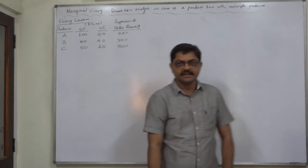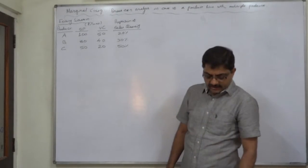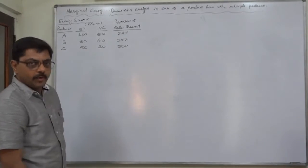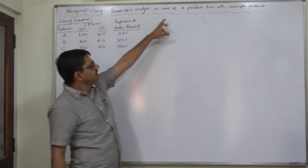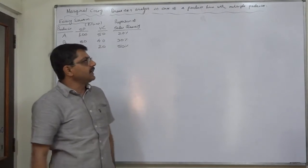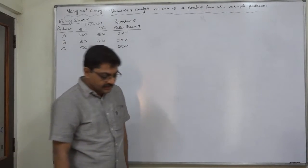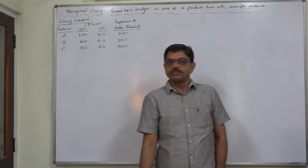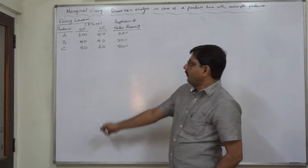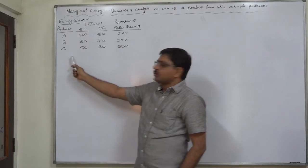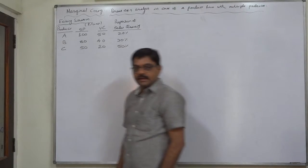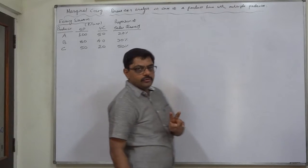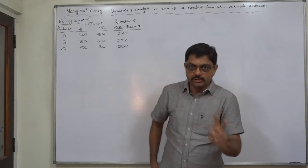Hello and welcome friends. In marginal costing, we are going to discuss a very unique point — break-even analysis in case of a product line with multiple products. That means we need to find out the break-even point when the company is dealing with two or more products. In such a case, I am going to give you two very important rules.